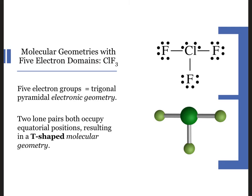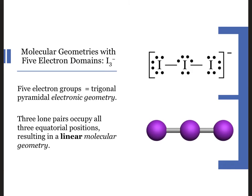A second lone pair of electrons would also reside in an equatorial position, as shown here for chlorine trifluoride. The resulting molecular geometry is considered T-shaped. If we have three lone pairs of electrons in a molecule with five electron domains on the central atom, we place all the lone pairs in the equatorial positions to get a linear molecular geometry.